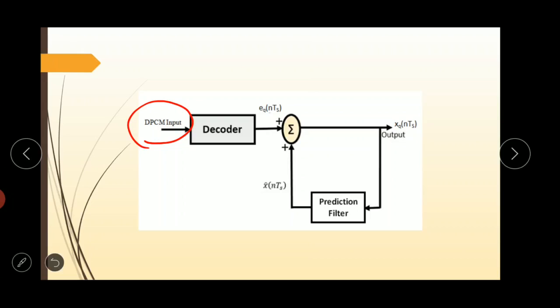The prediction filter output and quantized error signal are summed up to give the quantized version of the original signal. Here we get the quantized version of the original signal.